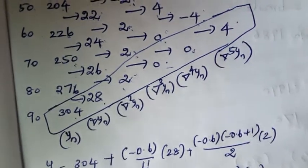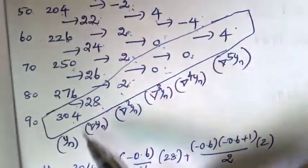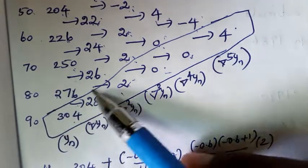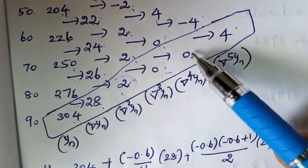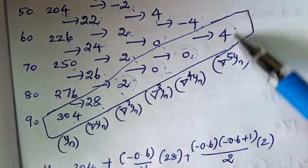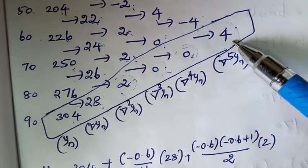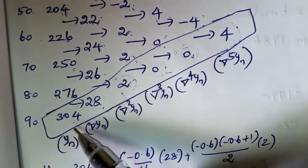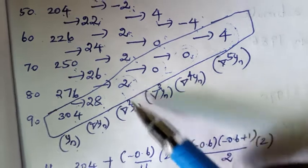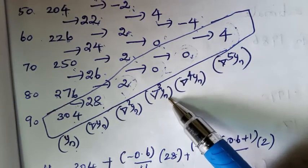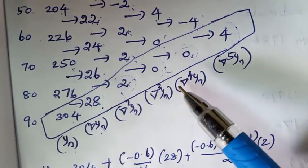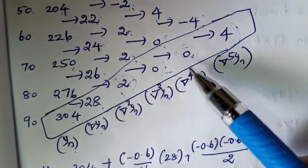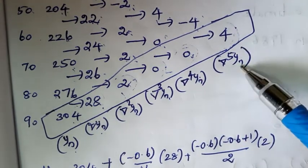From the backward difference table, we select the last value of each column: yₙ = 304, ∇yₙ = 28, ∇²yₙ = 2, ∇³yₙ = 0, ∇⁴yₙ = 0, ∇⁵yₙ = 4.